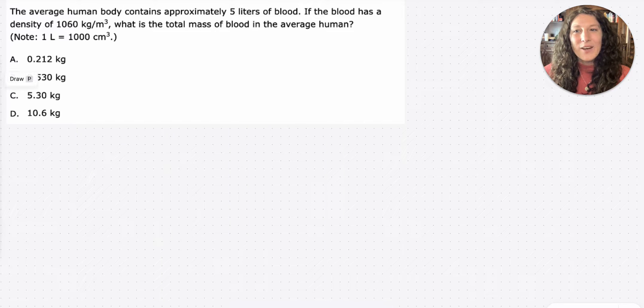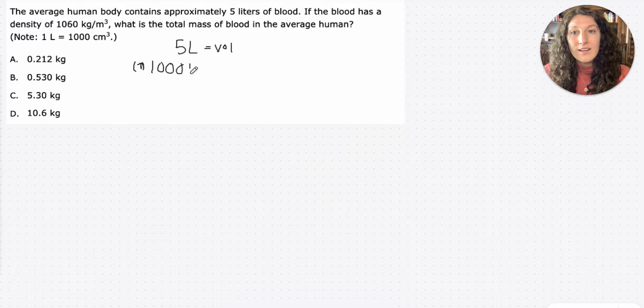This is a great opportunity to use our math steps. We're going to start with step one, which is writing out the numbers that they provide for you in the question. The average human body contains approximately 5 liters of blood, and that's a volume. If the blood has a density of 1,000, I'm already rounding down so I know that my actual number is going to be a little higher, kilograms per meters cubed is our density. And then we're asked, what is our mass in kilograms?